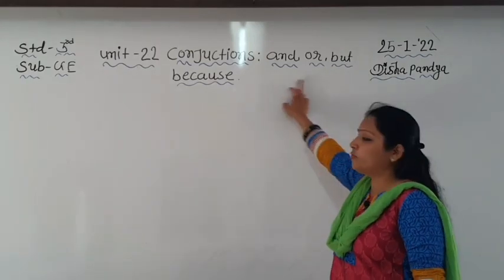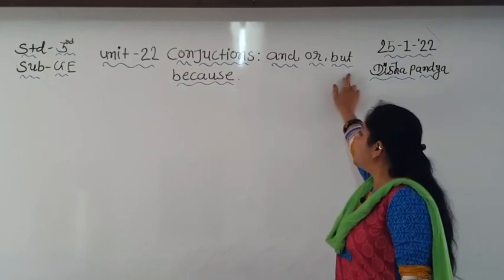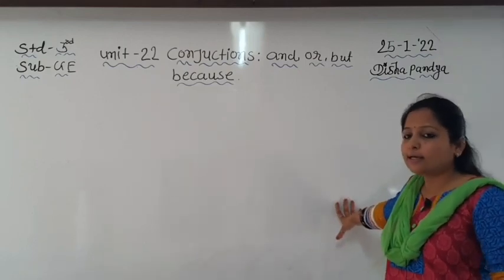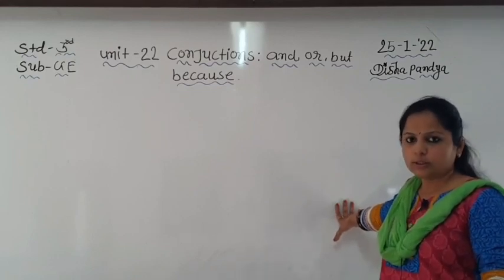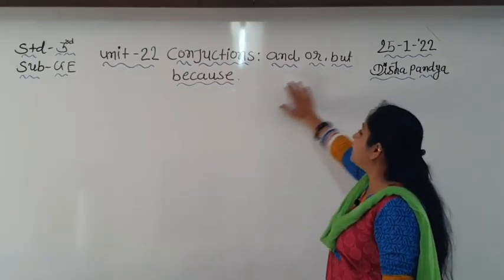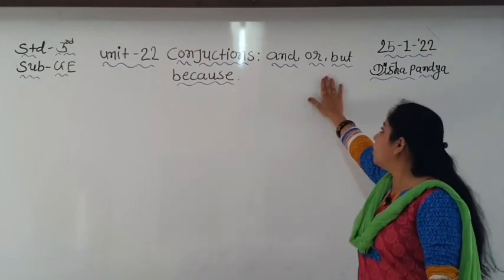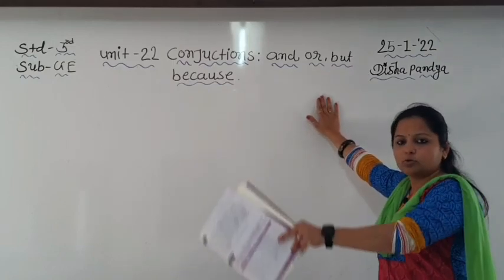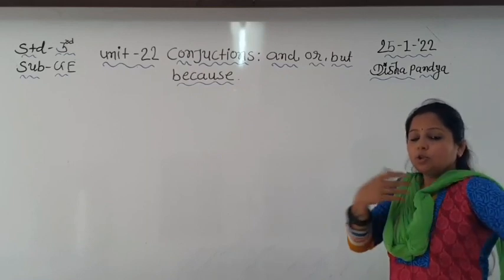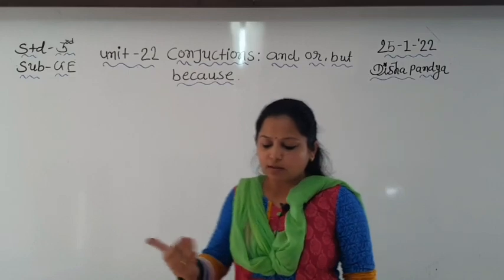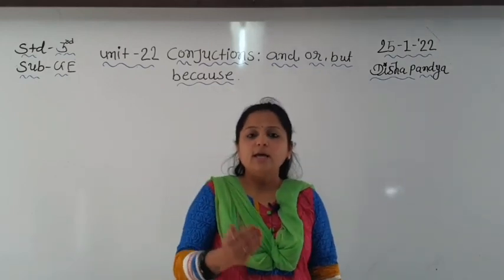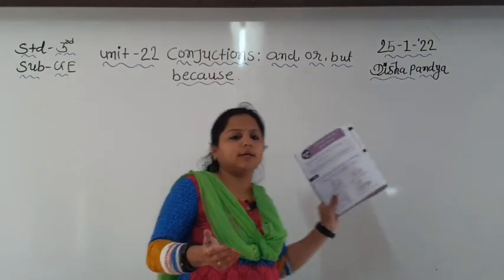The conjunctions we will study are: and, or, but, and because. Conjunctions का मतलब है जोड़ना — to join sentences together. And का मतलब है 'और', or का मतलब है choice देना, but यानी किंतु/परंतु, और because का use तब होता है जब हमें एक sentence का दूसरे से relation या reason discuss करना हो।